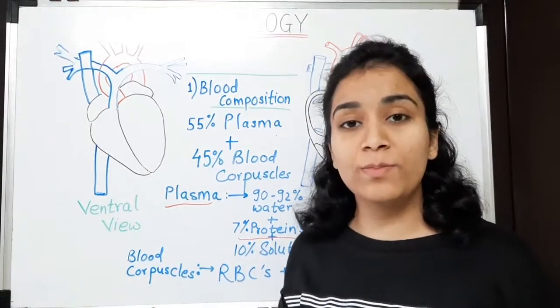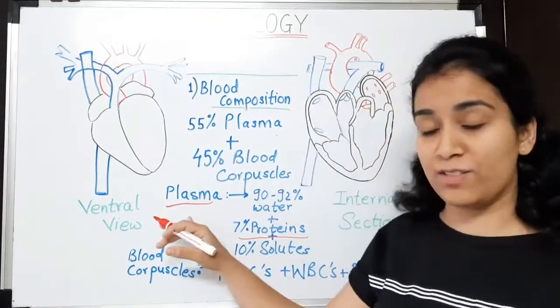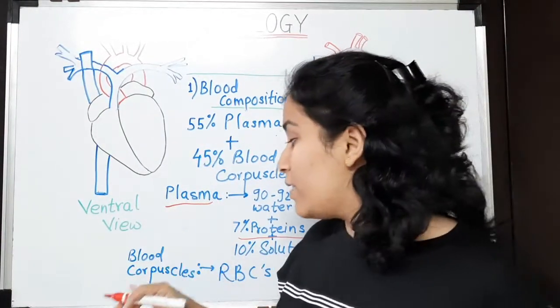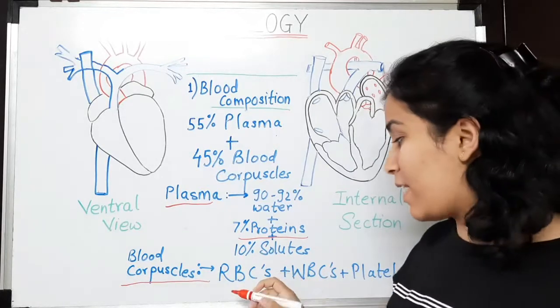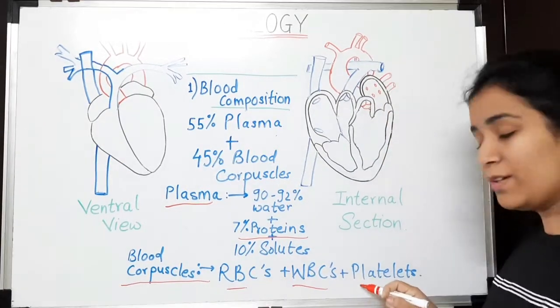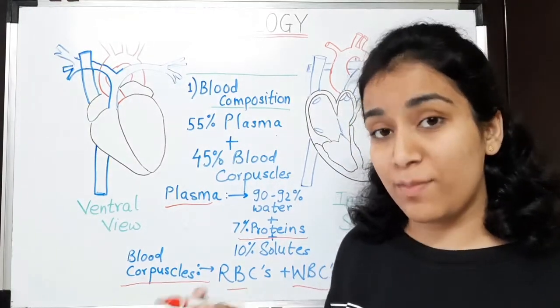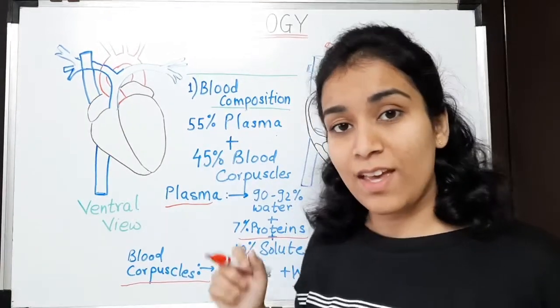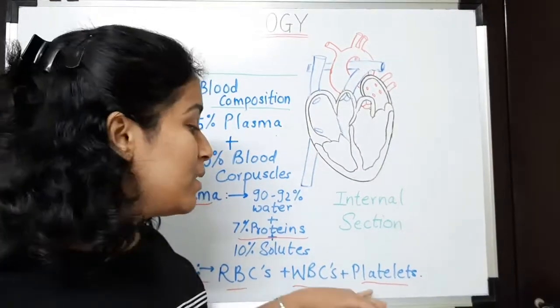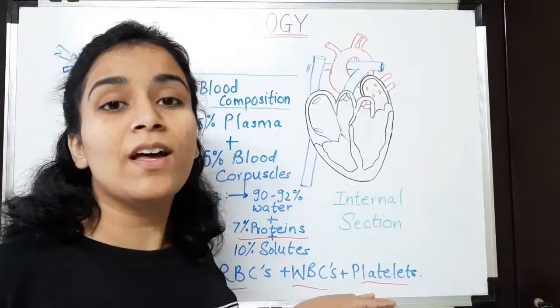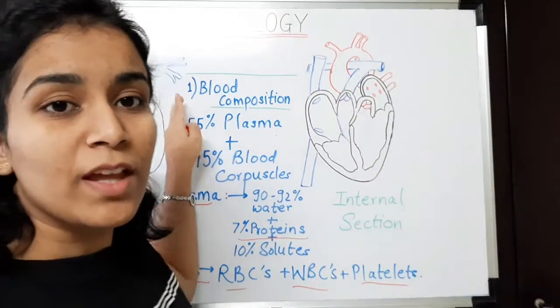These include like serum, then globulin, albumin. These all are called as plasma proteins because they are present in plasma. Now, blood corpuscles. These consist of three main cells that are RBC, WBC and platelets. RBCs are also known as erythrocytes. WBCs are also known as leucocytes. And platelets are also known as thrombocytes. And these all components are included in blood.